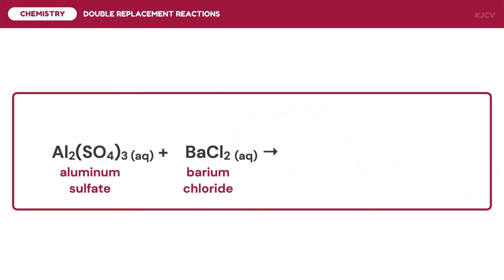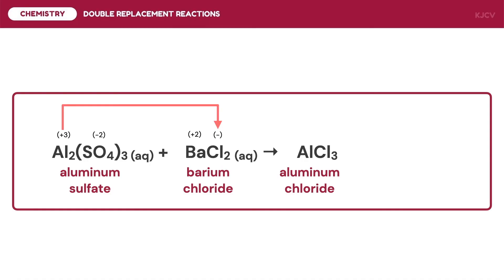For the last example, we have the reaction between aluminum sulfate and barium chloride. For aluminum sulfate, aluminum has a positive charge of 3 and sulfate has a charge of negative 2. For barium chloride, barium has a charge of positive 2 and chloride has a charge of negative 1. Our rule is that a positive ion pairs with the negative ion of the other compound. Therefore, aluminum pairs with chloride to form aluminum chloride, and barium pairs with sulfate to form barium sulfate (BaSO₄).